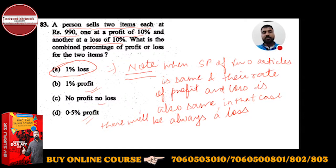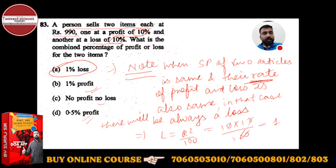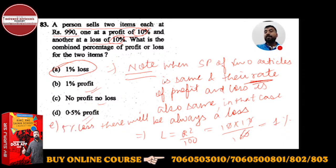Okay, let's do one or two more questions and then I'll wind up. If you also need to find the value, that loss will be given by r²/100. Here r is the rate, and the rate given is 10%. So 10² means 10 × 10 upon 100 — cancel two zeros — so loss percent = 1%. That will be the right answer.